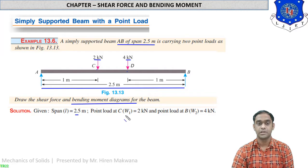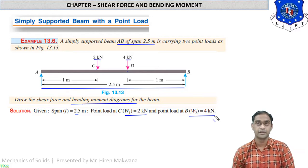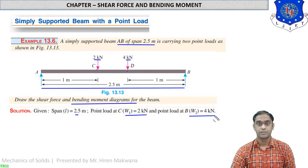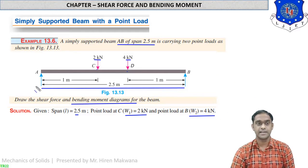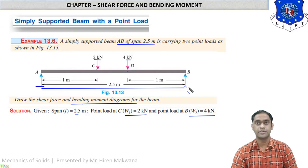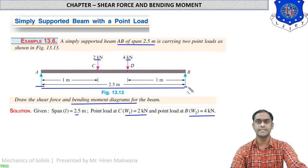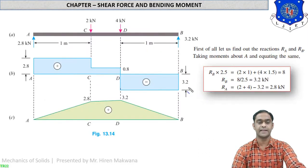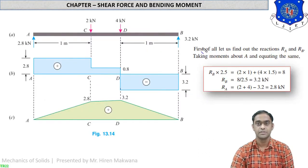The span is 2.5 meter. Load W1 at C is 2 kN and load W2 at D is 4 kN. At points A and B there are two support reactions RA and RB, so we first have to calculate these two support reactions. Let us find RA and RB.